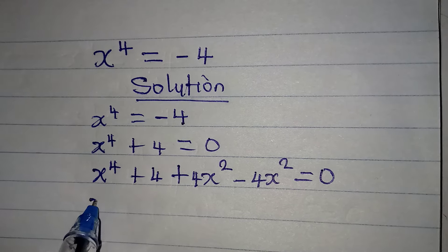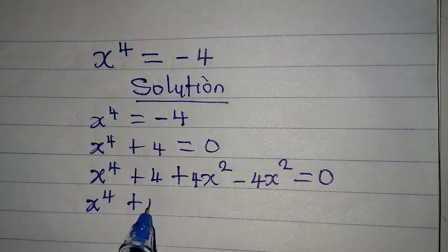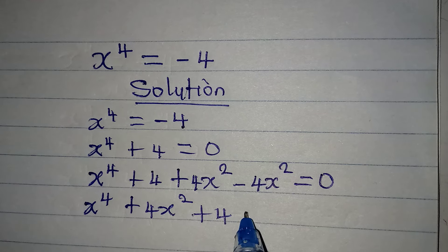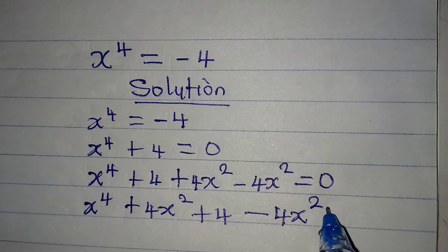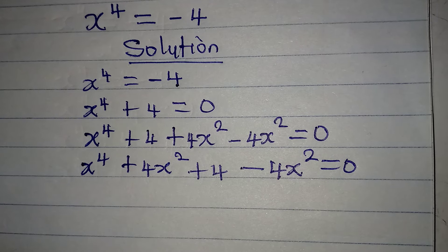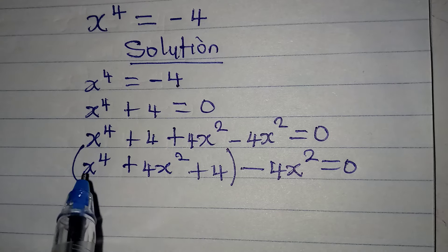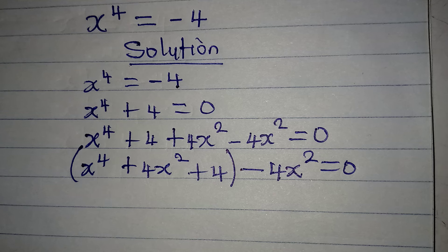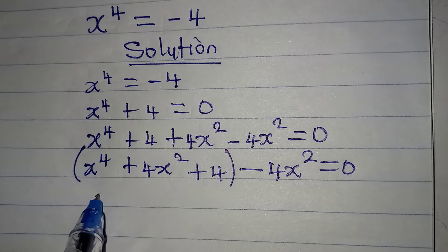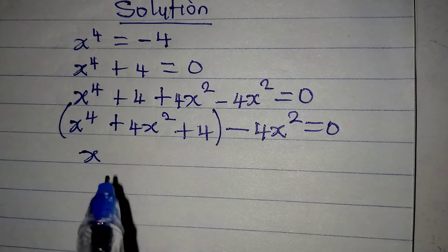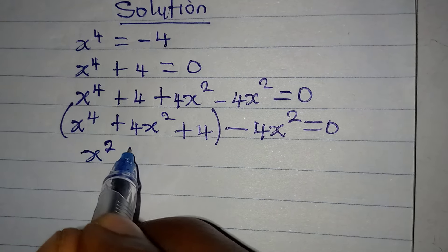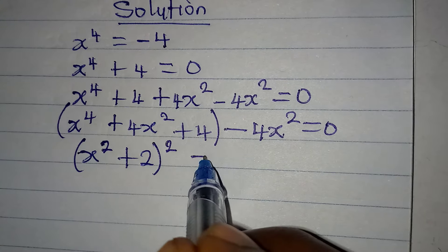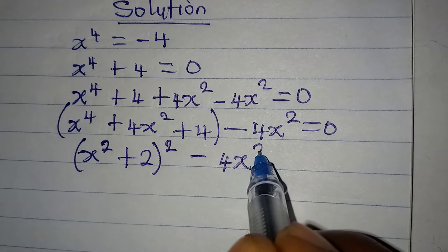What I want us to do is rearrange this so that we have x to the power of 4 plus 4x squared plus 4, then minus 4x squared, equal to zero. Remember that if you factorize the whole of this, you are going to have a perfect square, which will be x squared plus 2, in two places, then we have minus 4x squared.